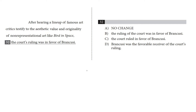We have this whole phrase here that's been underlined at the end of the sentence. Choice A is no change — the court's ruling was in favor of Brancusi. Then there are rephrased versions: B — the ruling of the court was in favor of Brancusi; C — the court ruled in favor of Brancusi; and D — Brancusi was the favorable receiver of the court's ruling.